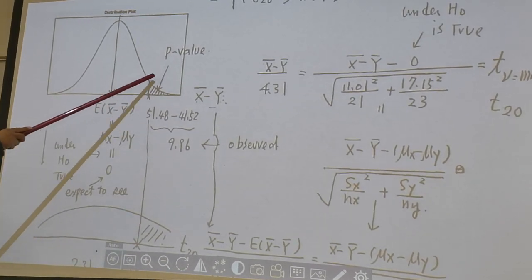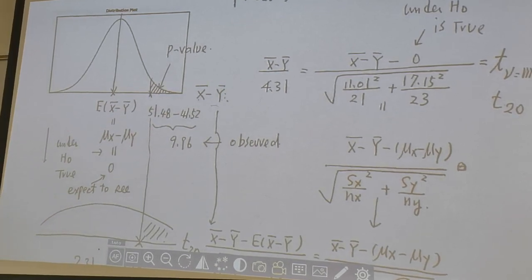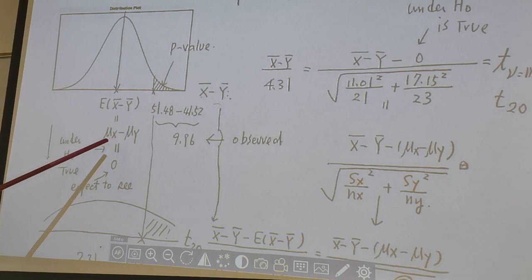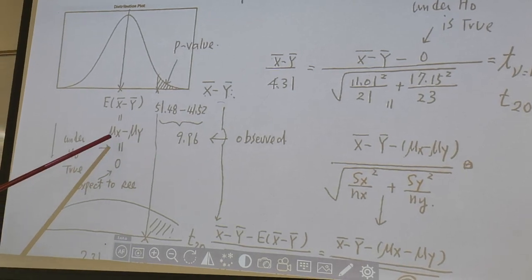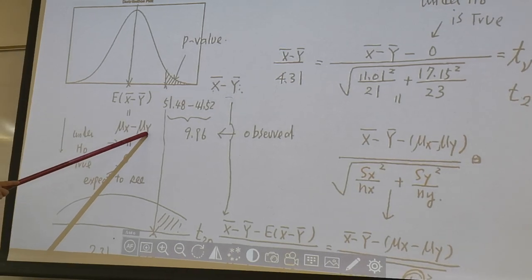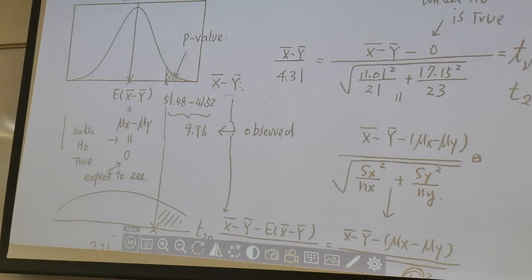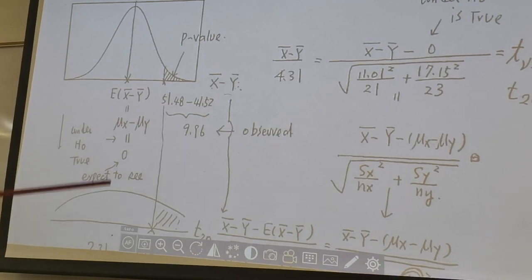So this shaded area is the p-value. Let's try one more time. What is H0? H0 is treatment makes no difference when you compare with control. That means new directed reading activity actually is useless.